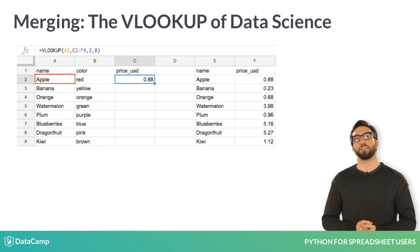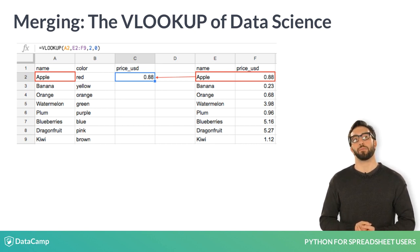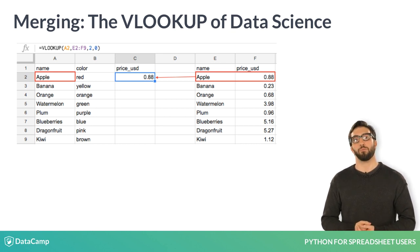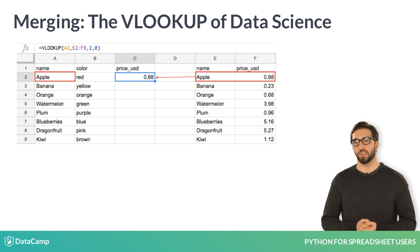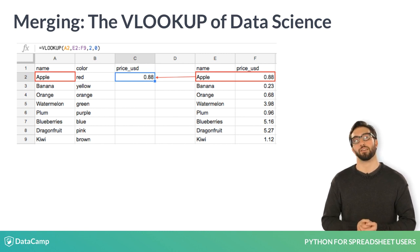To review, a VLOOKUP will take a value — here apple in cell A2 — and compare it to another table, here cells E2 through F9. The VLOOKUP finds the rows where apple is located in the right-hand table and outputs a corresponding value in the left-hand table, here price. Merging, or joining, in Python works a little differently, and so in this lesson we'll cover preparatory techniques for handling these differences.